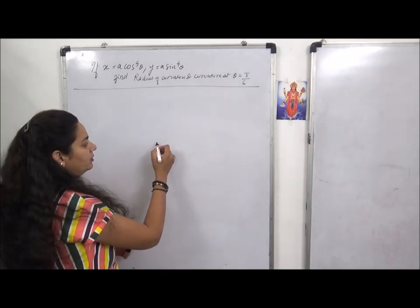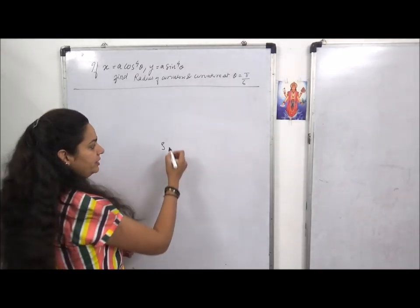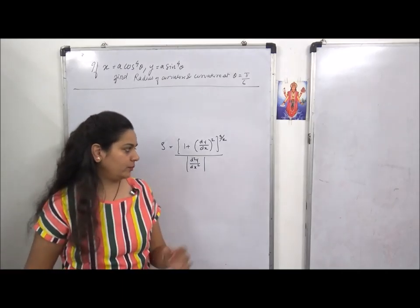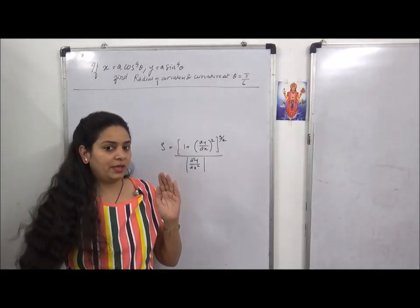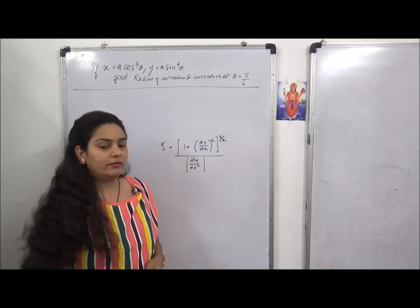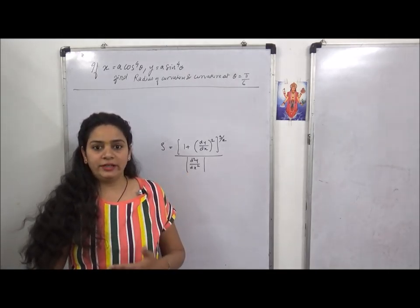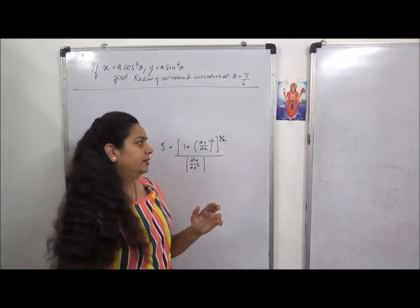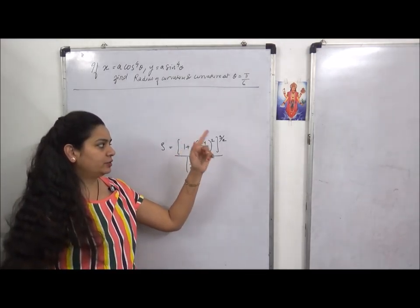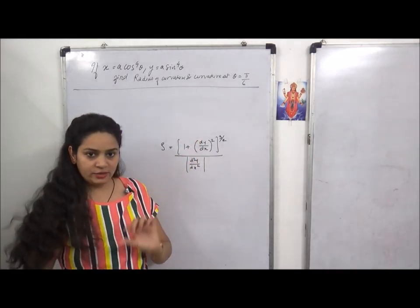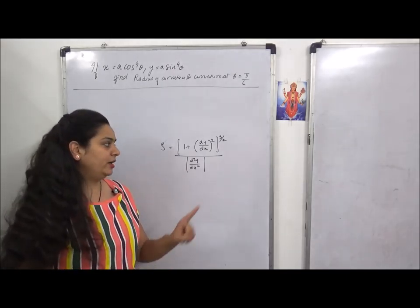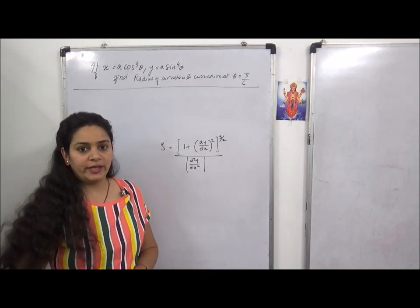Rho is radius of curvature which is given by 1 plus dy by dx whole square raised to power 3 by 2 upon mod of d square y by dx square.